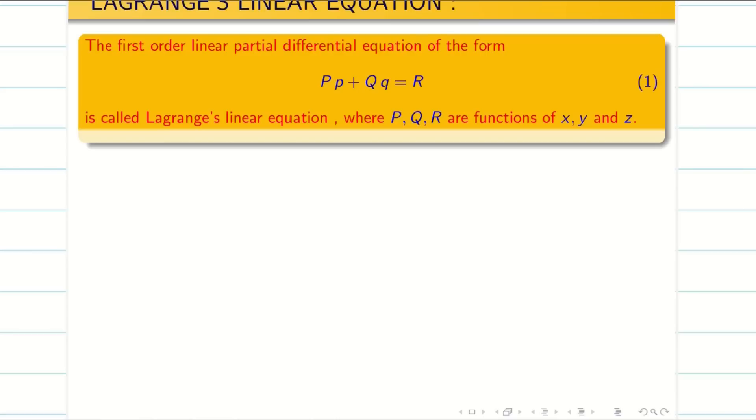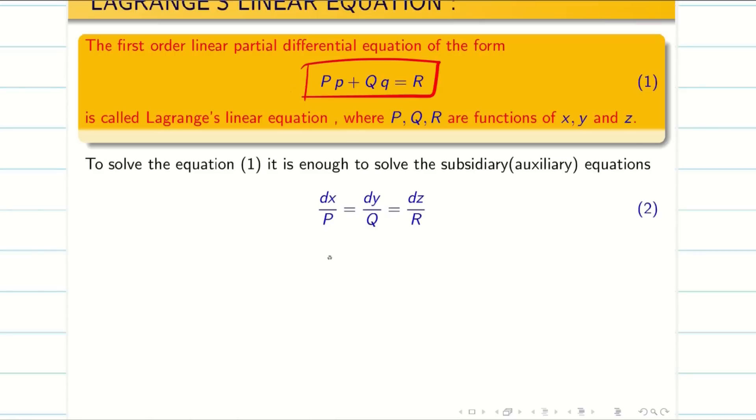The first order linear partial differential equation of the form Pp + Qq = R, where p, q, r are functions of x, y, z, is called Lagrangian linear equations. All the basics we have seen in the first part of the video.